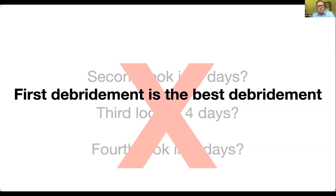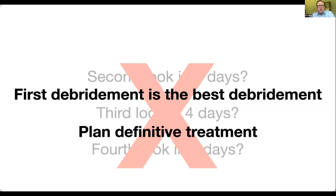The first debridement is the best debridement. In your first debridement, you should be looking to eradicate all of the dead and infected tissue. At the first debridement, you should also be planning your definitive treatment. That may not be executable two days later, but the surgeon undertaking the first debridement is the person best positioned to work out a pathway for this patient.